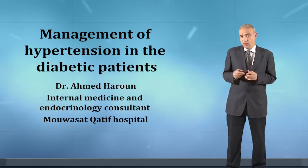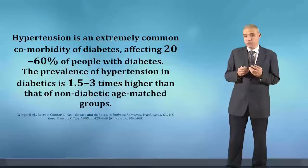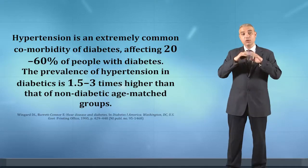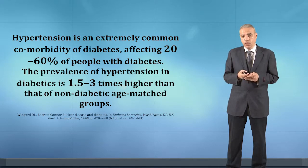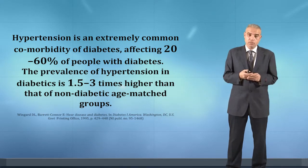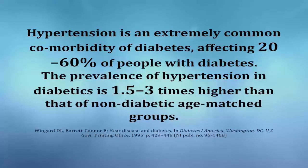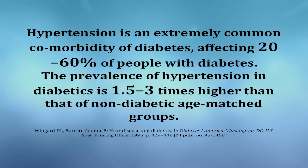Hypertension is very common in diabetic patients. The general incidence across type 1 and type 2 diabetics collectively is between 20 to 60%. Given that the general incidence of hypertension is about 30% in the general population, according to the National Health and Nutrition Examination Survey 2003, diabetic patients have almost double the incidence of hypertension. The prevalence is 1.5 to 3 times higher than non-diabetic age-matched individuals.